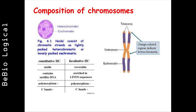Heterochromatin is further classified into two groups. Constitutive heterochromatin, which is present in all cells at identical positions on both homologous chromosomes of a pair. And facultative heterochromatin, which varies in state in different types of cells at different stages, or sometimes from one homologous chromosome to another.